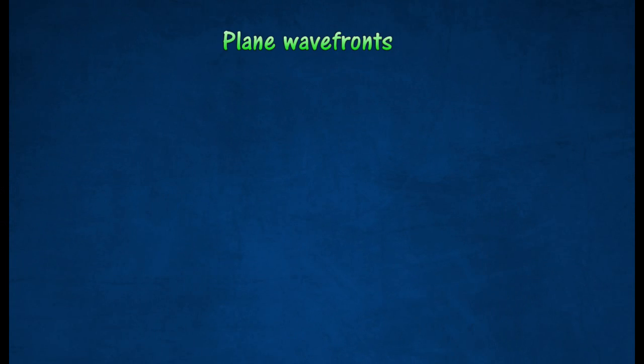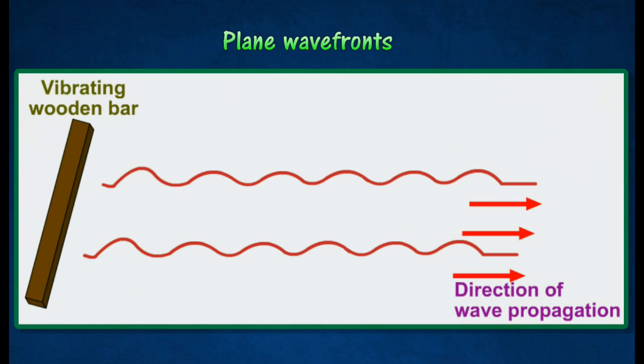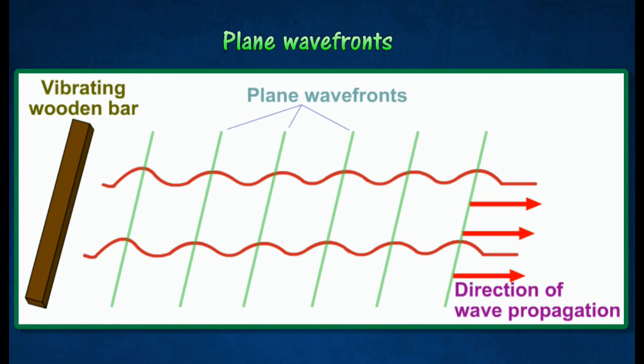By touching the water surface with a wooden bar, crest of plain waves can be seen moving outwards from the source of disturbance. Wavefronts are lines or surfaces joining all the crests, or points vibrating at the same phase and of equal distances from the source of the waves. The green lines are called wavefronts.